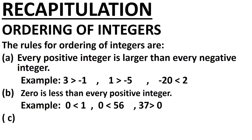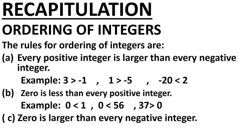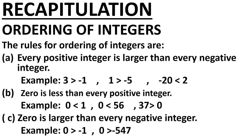The next rule is: 0 is greater than every negative integer. It is smaller than every positive integer but greater than every negative integer. For example, 0 is greater than minus 1, 0 is greater than minus 547, or we can write minus 28 is less than 0.